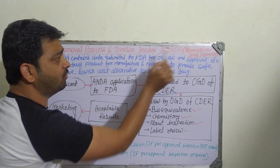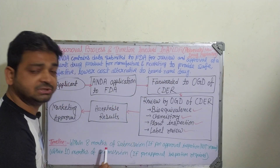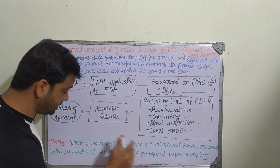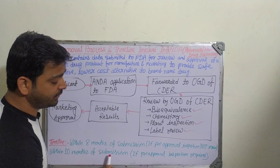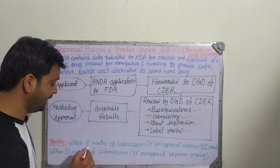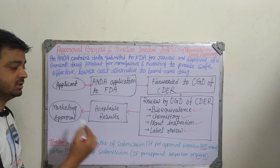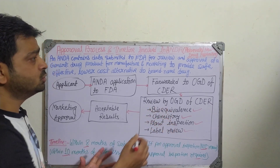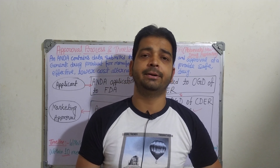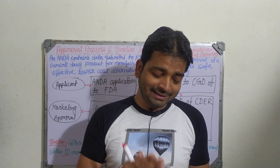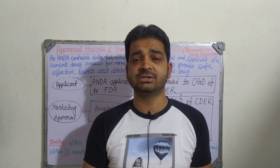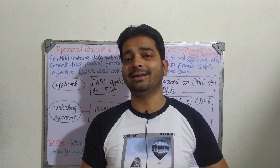Regarding the timeline involved in ANDA: within eight months of submission if pre-approval inspection is not required, and within ten months of submission if pre-approval inspection is required. ANDA is a major step. It is not that any company can manufacture a patent-expired drug without approval — approval is also required because ultimately the drug will be used by patients, and they should not have any side effects or adverse events, and at the same time it should give the therapeutic effect as the branded drug. Thank you.